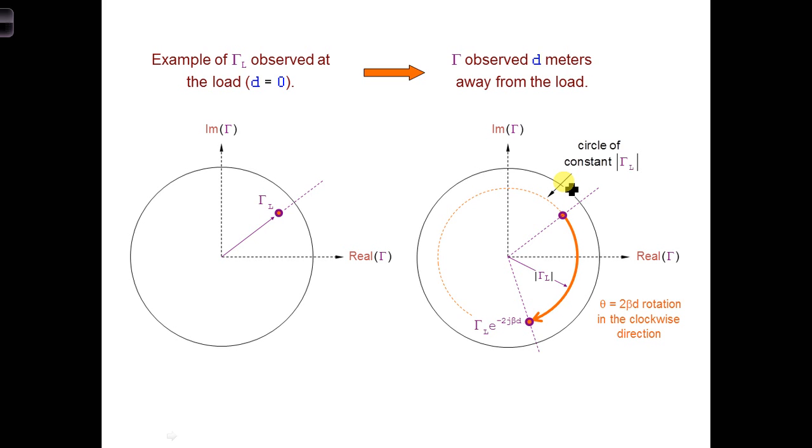Does the magnitude of the reflection coefficient change with position along the transmission line? I can see that.